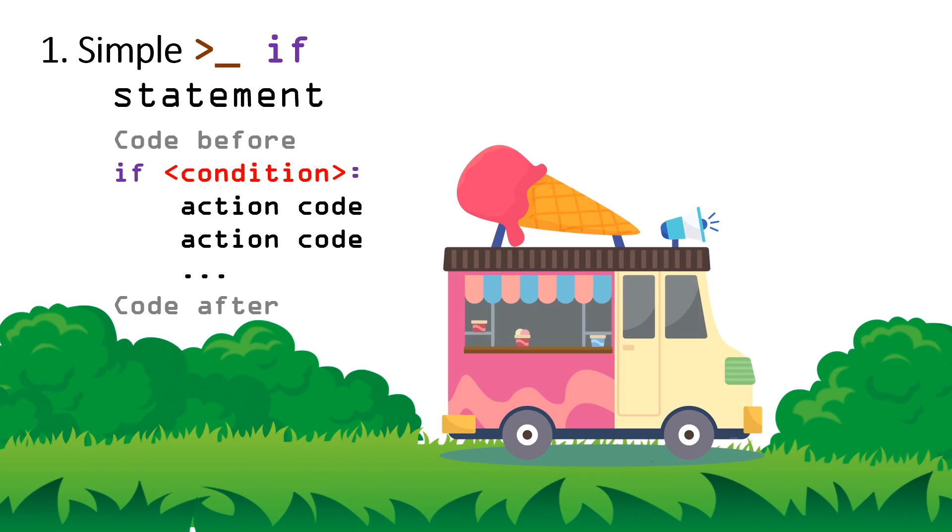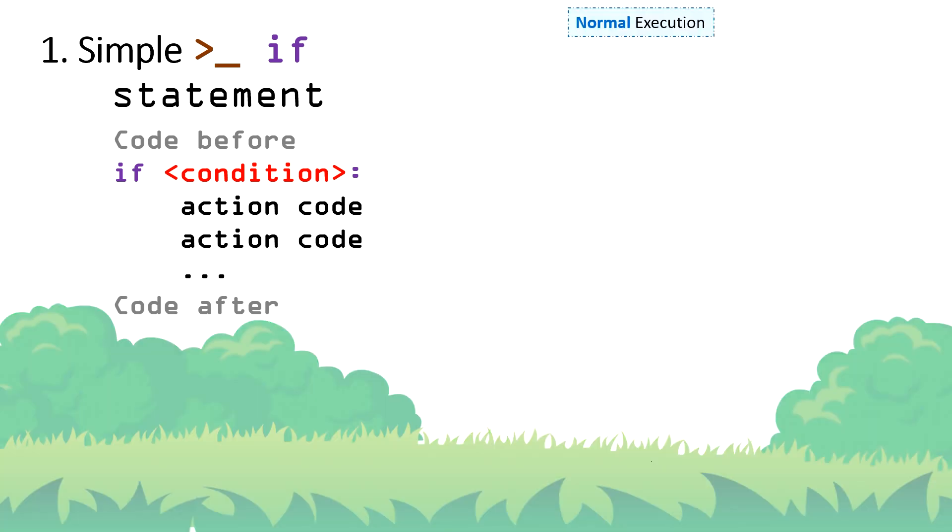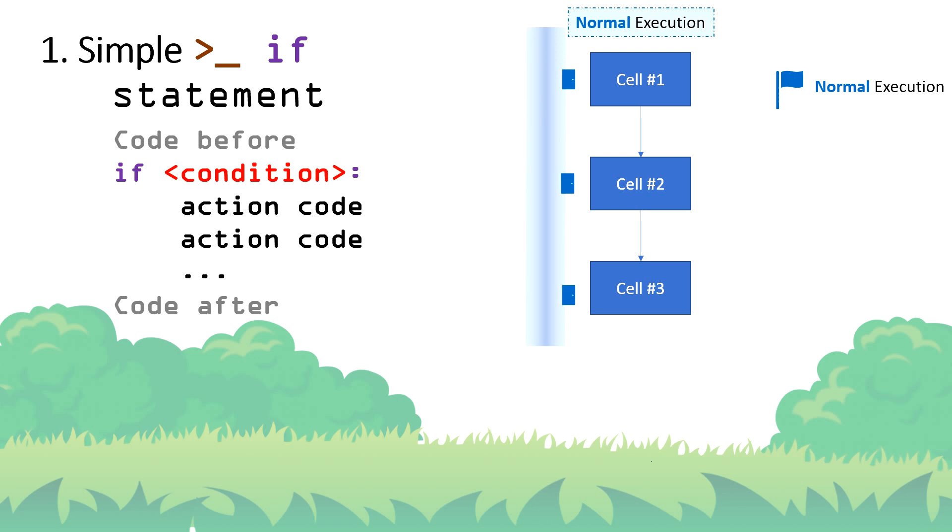Let's look at normal code execution and how the introducing of if statements makes a difference. I will highlight the normal code execution with blue color. In normal code execution, the flow goes from one cell to the next code cell and then the next code cell and so on. Normal code execution is like a subway with several train stations. The train goes from station one to station two and then station number three in sequence without any possibility to escape any of them and jump directly to the next one.